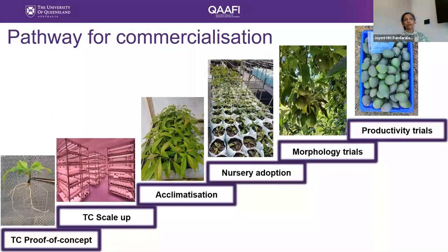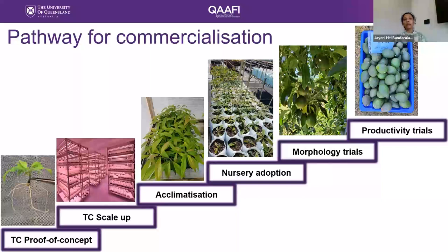In setting up procedures for commercially viable technology development, we started with developing a proof of concept, then scaling up trials in our UQ lab, then taking plants from jars to the outside environment. Once plants reached a certain size, we moved them to the nursery environment to test whether nursery practices were adaptable. The next stage was testing plants in field conditions to confirm they are true-to-type to the mother plants, and then grafting plants with Hass scions to evaluate their productivity and fruit production.